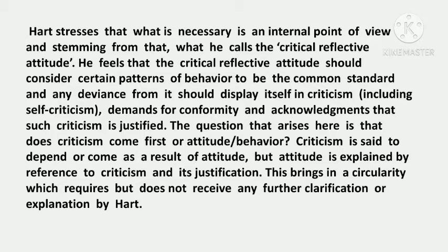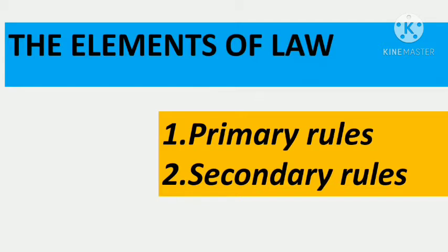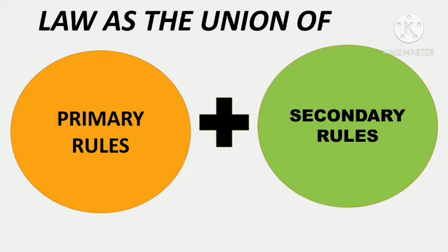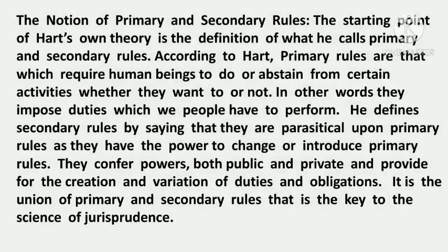Now let's come to the third part of Chapter 5, entitled 'Elements of Law.' In this part, Hart explained how these elements are necessary for the development of a legal society — and this part is the soul of Hart's theory. According to Hart, law is the union of primary and secondary rules. To explain the development of a legal system, Hart begins with pre-legal society.